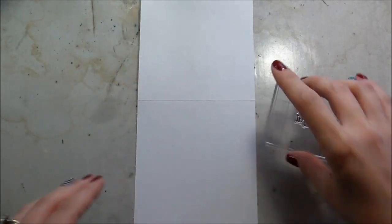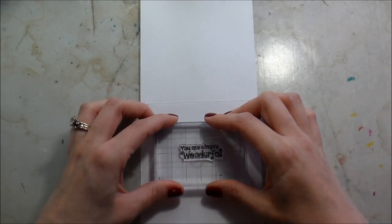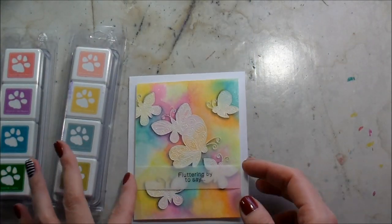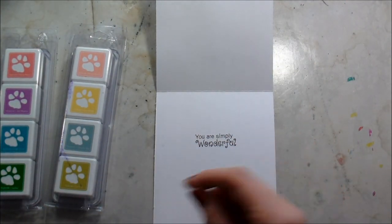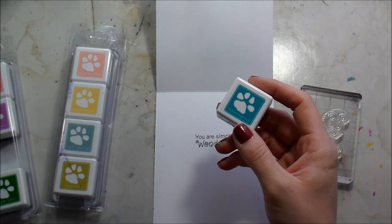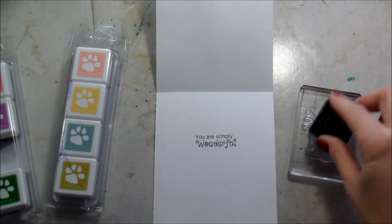And then I'm going to go ahead and do the inside of the card. So the front says just fluttering by to say and then on the inside it will say you are simply wonderful. So just like a little pick me up to send to some friends and then I have some Simon Says Stamps mini ink pads here and I'm going to pick out a couple to stamp my butterflies in.